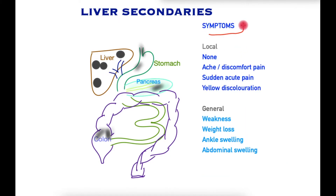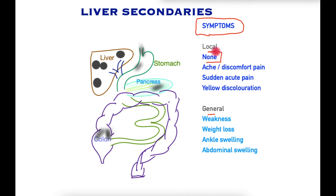What symptoms would we expect liver secondaries or metastases to produce? These may be divided into local symptoms related to the liver or more general symptoms. The great majority of liver metastases do not produce any symptoms at all, and they come to light when scans are performed or surgeries are performed on the abdomen.